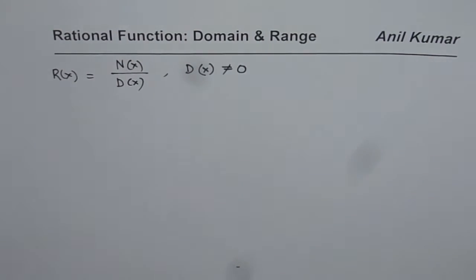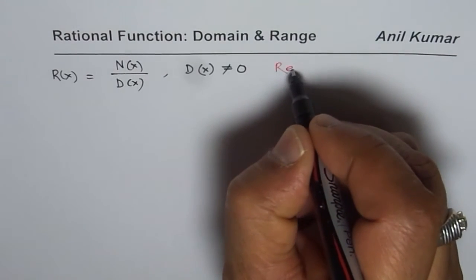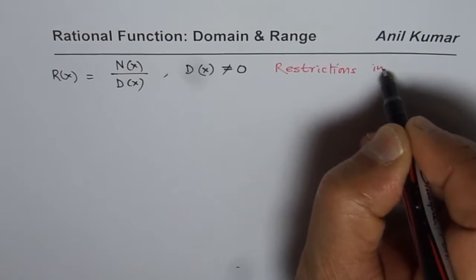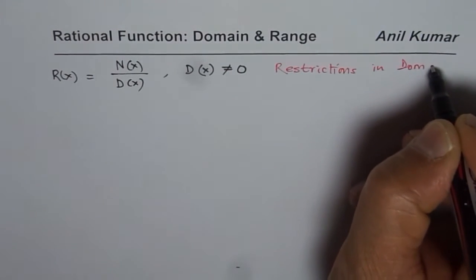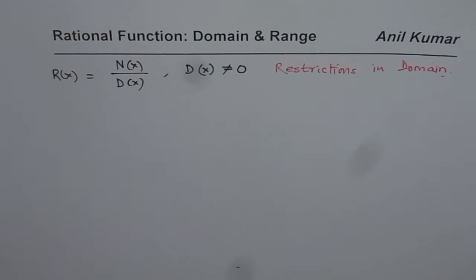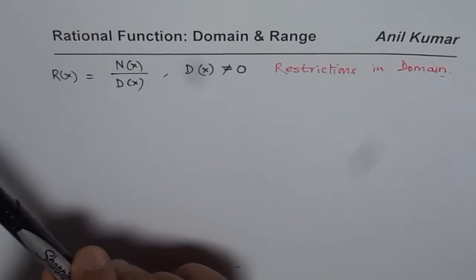That restriction leads to restrictions in the domain. To find restrictions in domain, equate the denominator to 0 and you have the full list of restrictions. That is how you find the domain of a rational function.